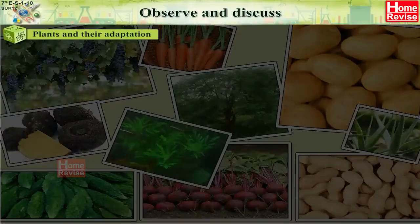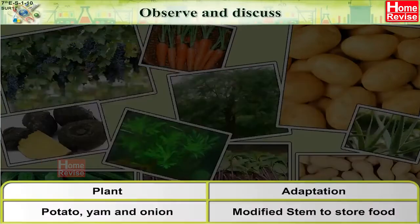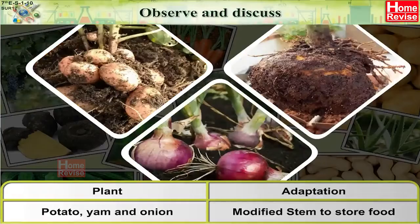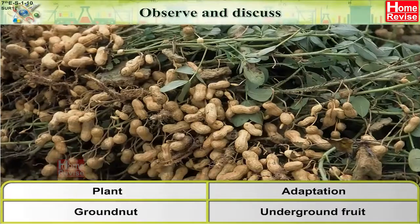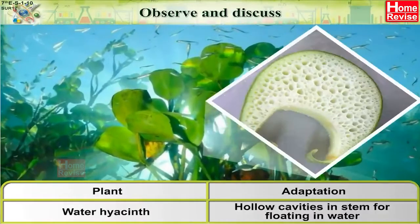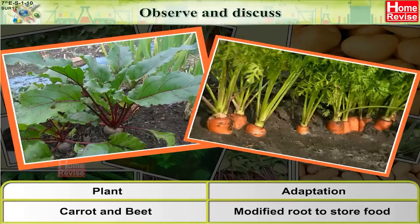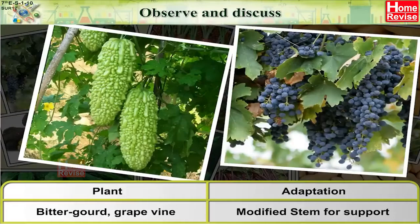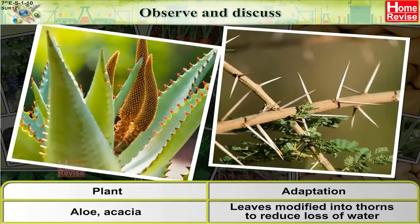Plants and their adaptations — a summary table: (1) Potato, yam and onions: modified stem to store food. (2) Groundnut: underground fruit. (3) Water hyacinth: hollow cavities in stem for floating in water. (4) Carrot and beet: modified root to store food. (5) Bitter gourd and grapevine: modified stem for support. (6) Aloe and acacia: leaves modified into thorns to reduce loss of water.